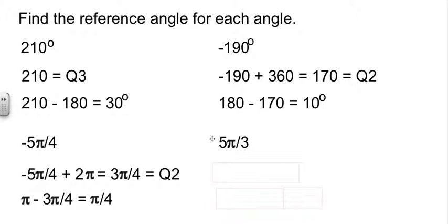One more here with those. We have 5 pi over 3. Again, I'm going to ignore the pi. I've got 5 thirds. Well, 5 thirds is 1 and 2 thirds. 1 and 2 thirds is more than 1 and a half. Not quite up to 2. That puts me in quadrant 4. The formula in quadrant 4 says 2 pi minus the angle. Well, if I've got 2 pi's minus 1 and 2 thirds pi's, that leaves 1 third of a pi. So pi over 3 is our reference angle.